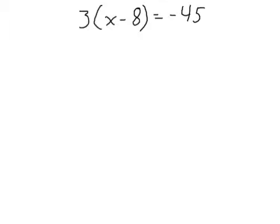We're going to look at this problem: 3 times X minus 8 equals negative 45. These problems you can solve two different ways depending on what you're more comfortable with. Remember that when we're doing algebra, we're working backwards, so we want to follow the reverse order of operations — we always follow SAMDEB. According to SAMDEB, we do addition and subtraction first, multiplication and division second, and brackets last.